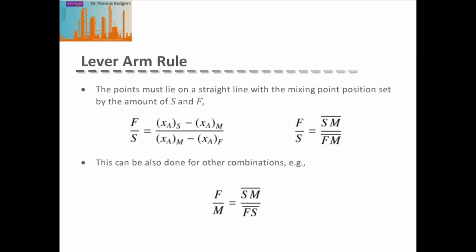So we know that our mixed point composition must lie on a straight line between our solvent composition and our feed composition. The point along this line is determined by our feed-to-solvent ratio. This feed-to-solvent ratio can be given by the amount of solute in the solvent minus that at the mixing point, divided by the amount of solute at the mixing point minus that in the feed. In terms of our ternary diagram, the ratio of feed to solvent is given by the ratio of the length of the line between our solvent and our mixing point, divided by the length of the line from our feed point to our mixing point. We can also generate these ratios for other combinations as well.